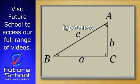In this triangle, the side opposite angle C, which is small c, is the hypotenuse.